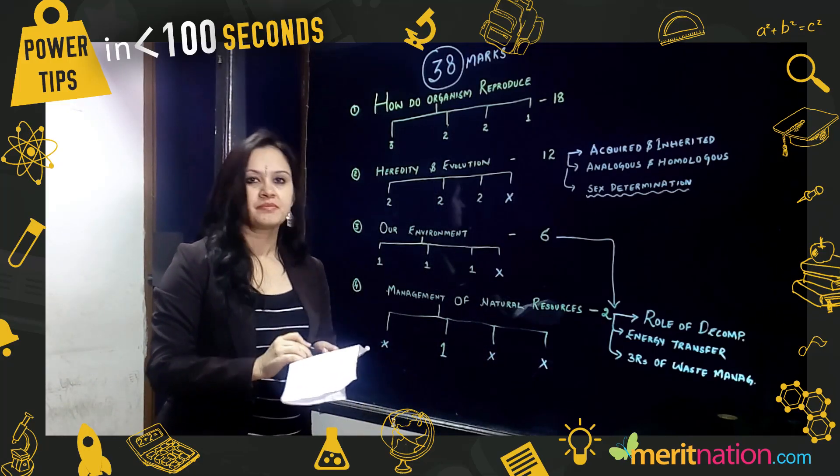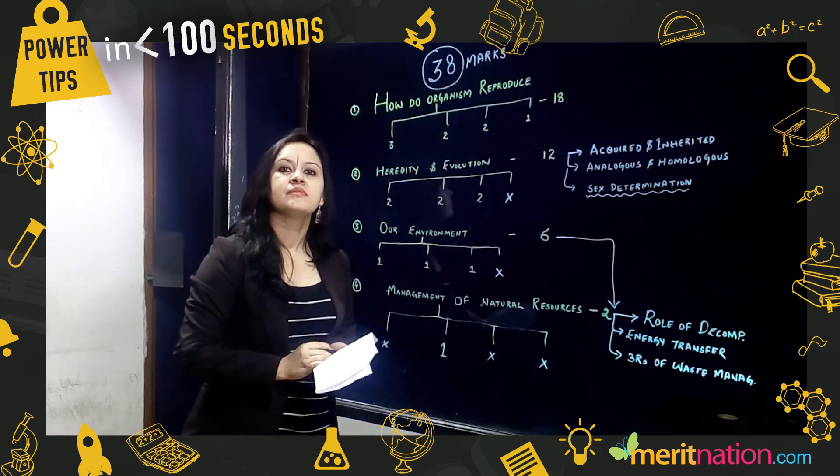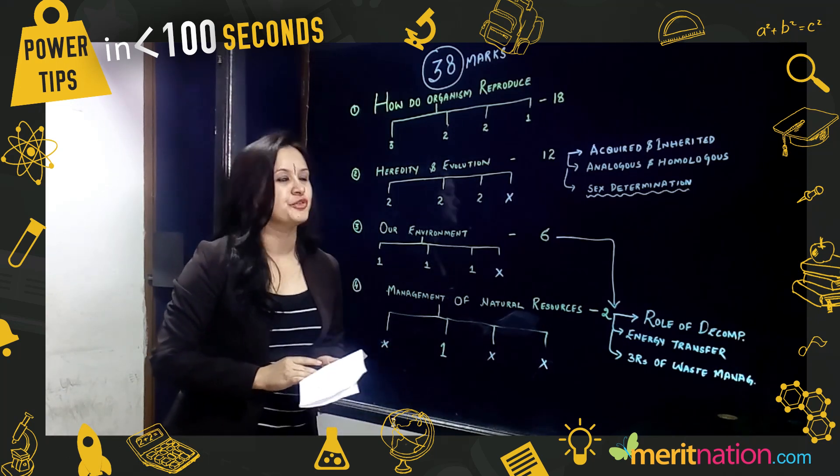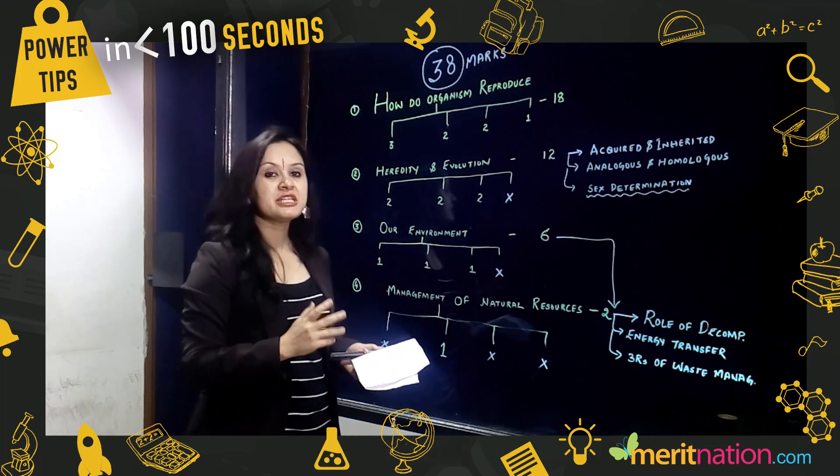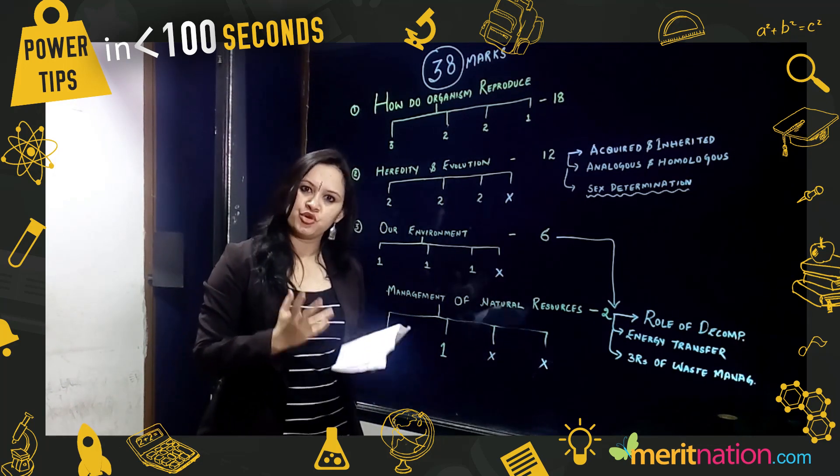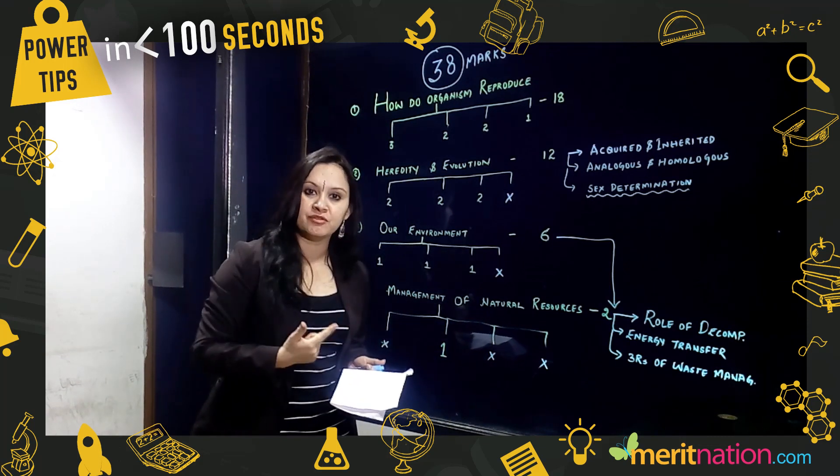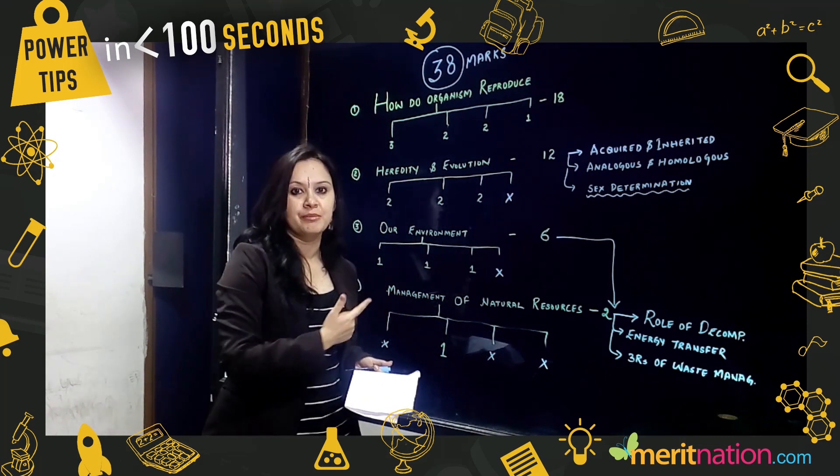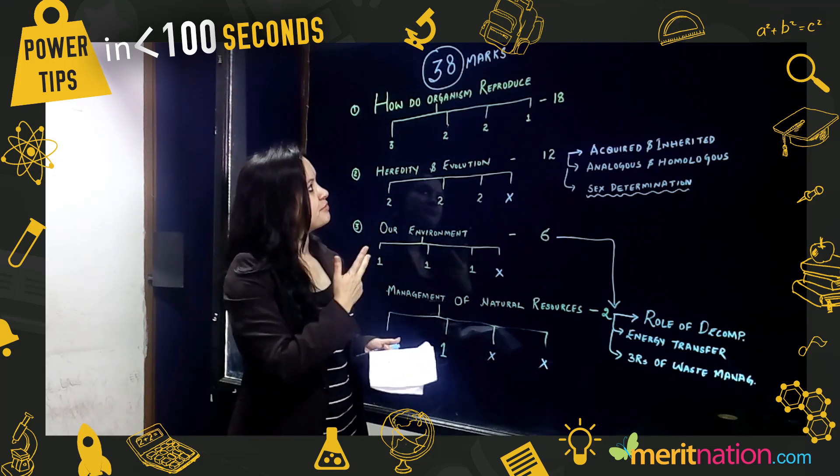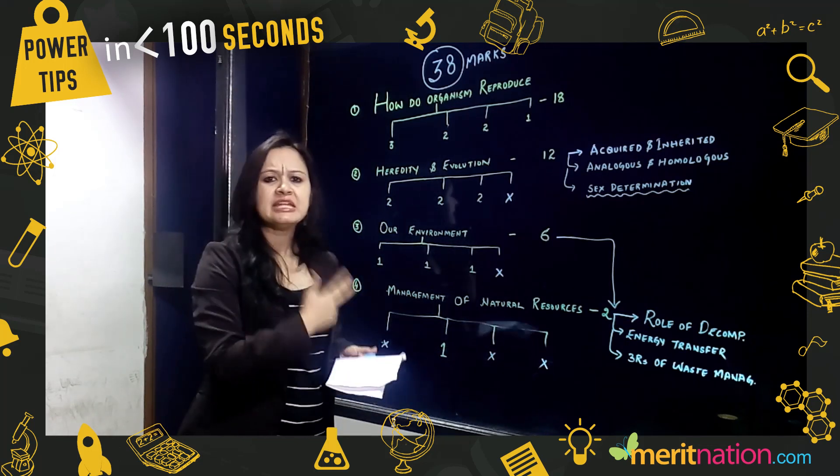What are the important chapters and topics for biology from the board exam? In biology, there are four chapters that are important from a board exam point of view: How Do Organisms Reproduce, Heredity and Evolution, Management of Natural Resources, and Our Environment. These four chapters are all really easy and scoring chapters.